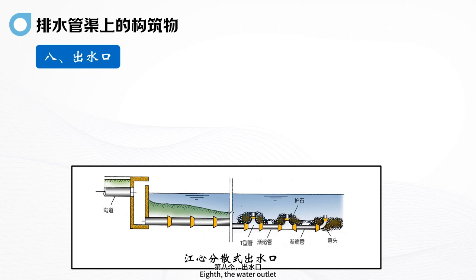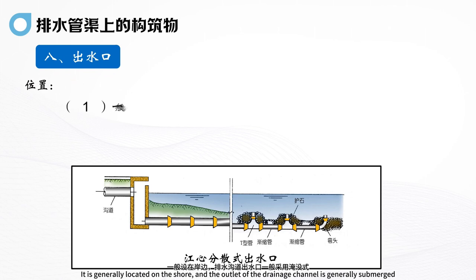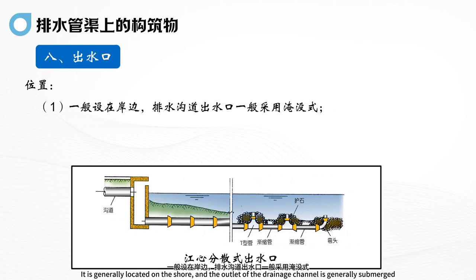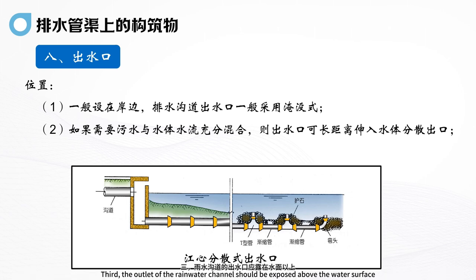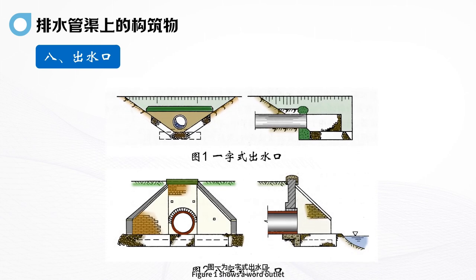Eighth, the water outlet. Location requirements: it is generally located on the shore, and the outlet of the drainage channel is generally submerged. If the sewage and water flow need to be fully mixed, the water outlet can extend into the water as a dispersion outlet for a long distance. The outlet of the rainwater channel should be exposed above the water surface. Figure one shows a straight outlet; Figure two shows the splayed outlet.